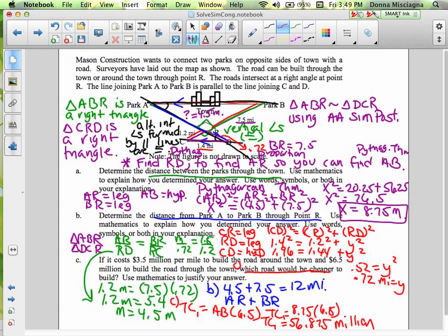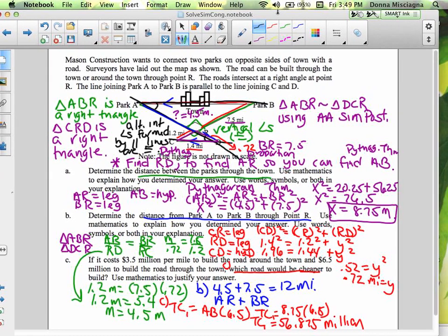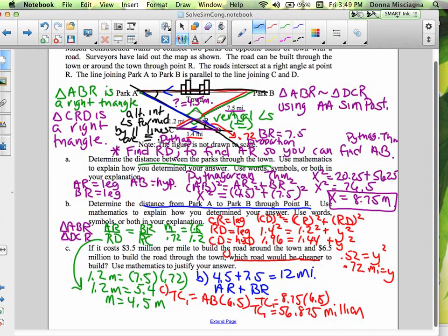All right, so that means our total cost is AB was somewhere up here, 8.75. So 8.75 times 6.5, means our total cost is, drum roll please, 56.875. So this is millions, we don't have to round this. So 56.875 million dollars. So our total cost one here is 56.875 million. All right, so now we just need to find the total cost to go around the road. So here's our total cost two. All right, so if we're going around the road, it would be 3.5 times around the town, AR plus RB, which is equal to 3.5 times AR is 4.5 plus 7.5.